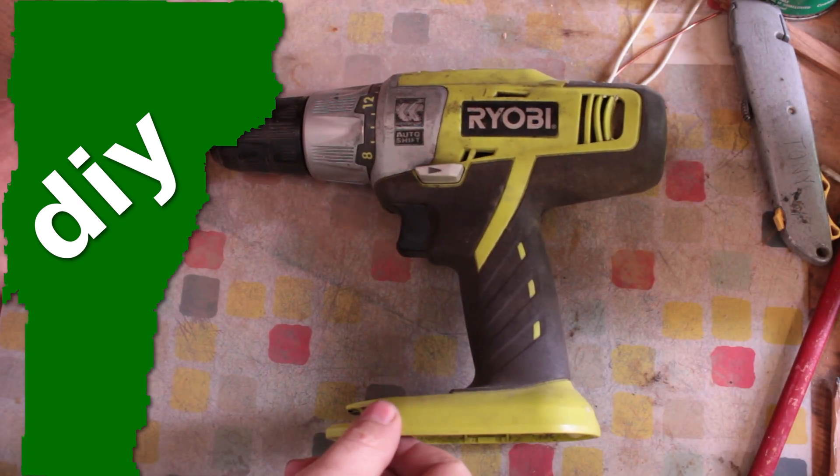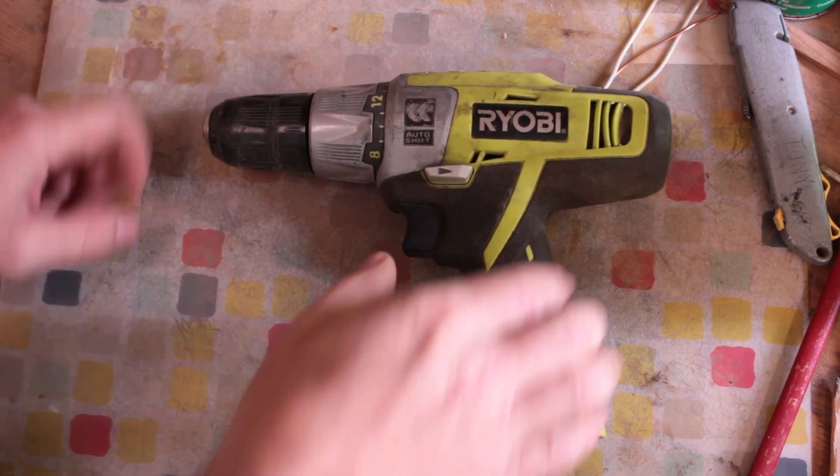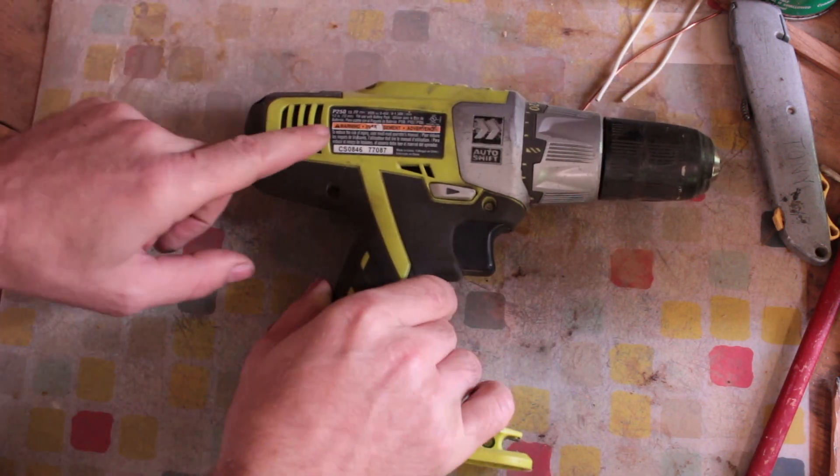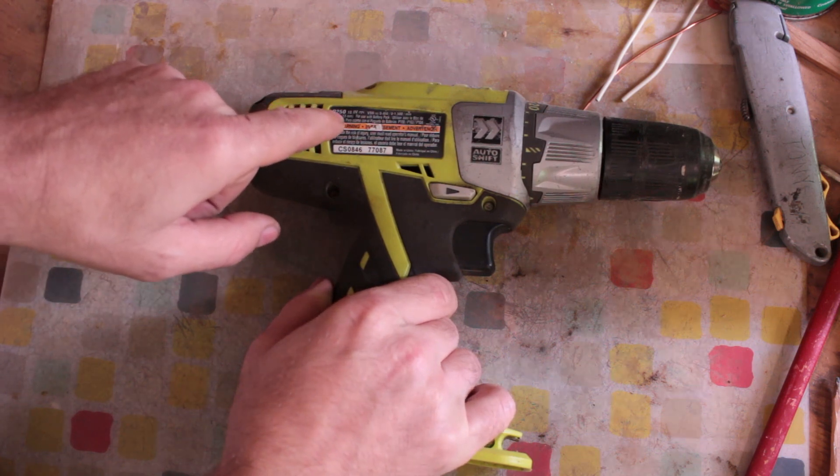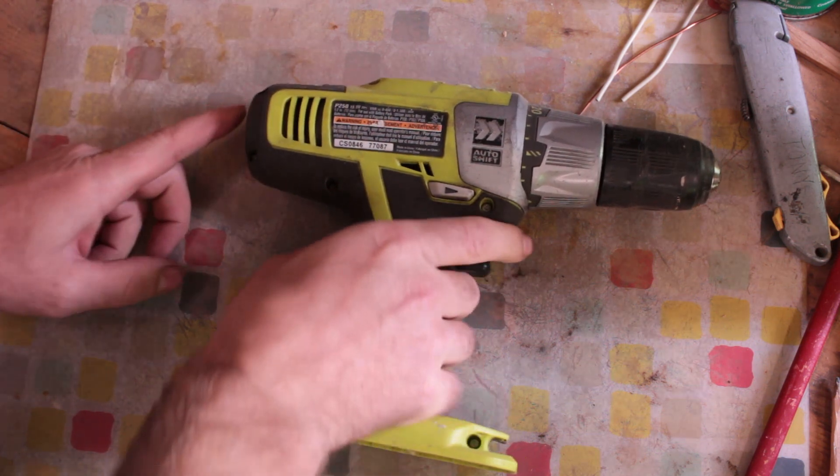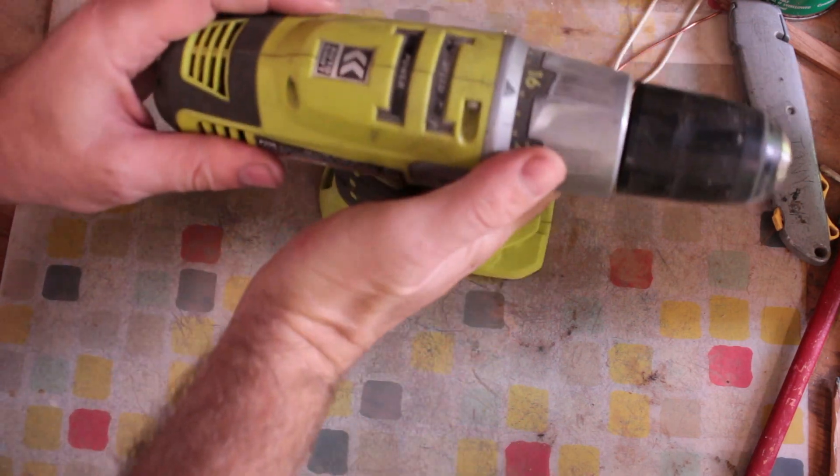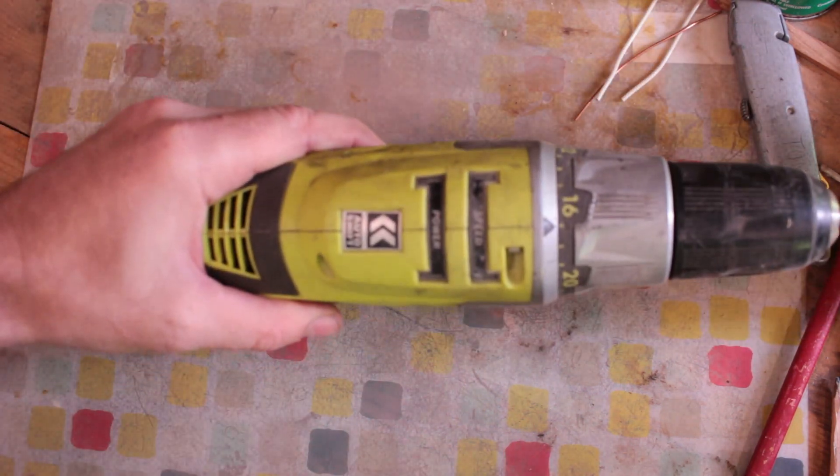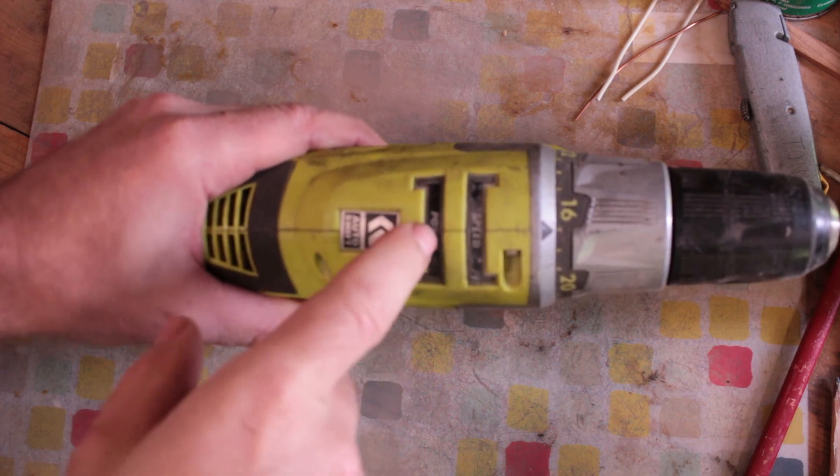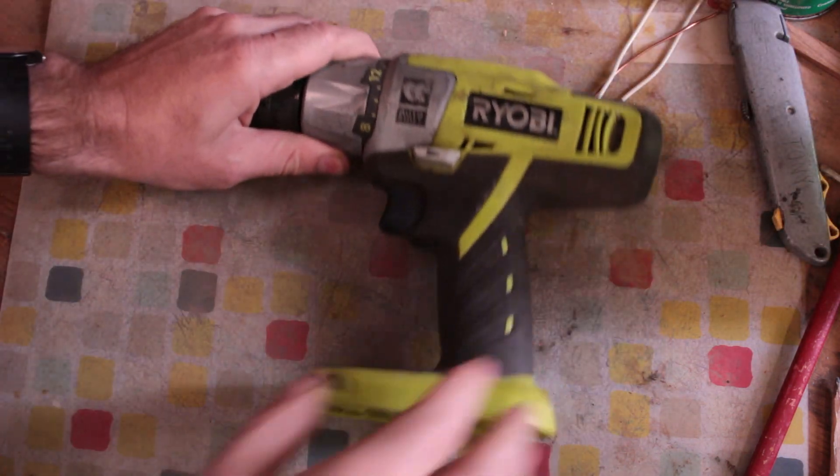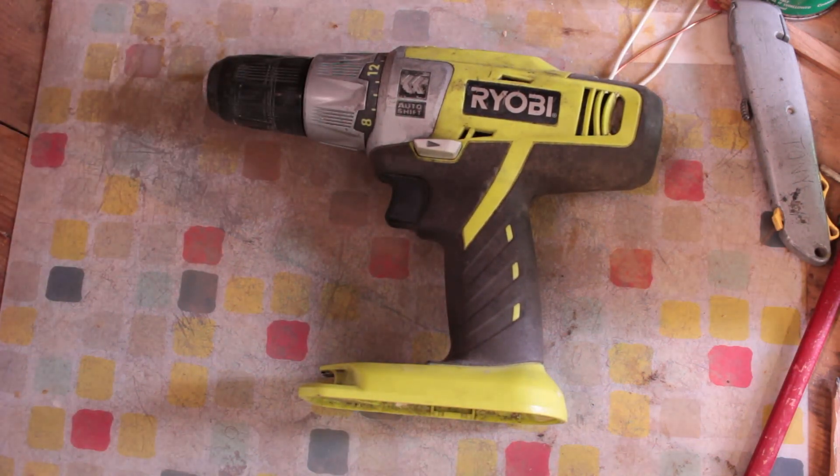So here we have a piece of failed Ryobi technology. This is a P250 cordless drill. Now it's an auto shift so it's got no shift knob. It just has power and speed which lights up and it is supposed to automatically shift from high to low.